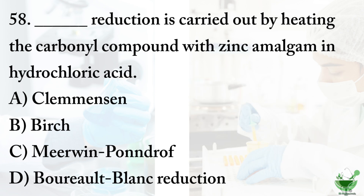Question number 58: Reduction carried out by heating the carbonyl compound with zinc amalgam in hydrochloric acid is which type of reduction? Option A, Clemmensen; option B, Birch; option C, Meerwein-Pondorf; option D, Birch blank reduction. The correct option is option A, Clemmensen reduction. In Clemmensen reduction, carbonyl compound is reduced with zinc amalgam in hydrochloric acid.